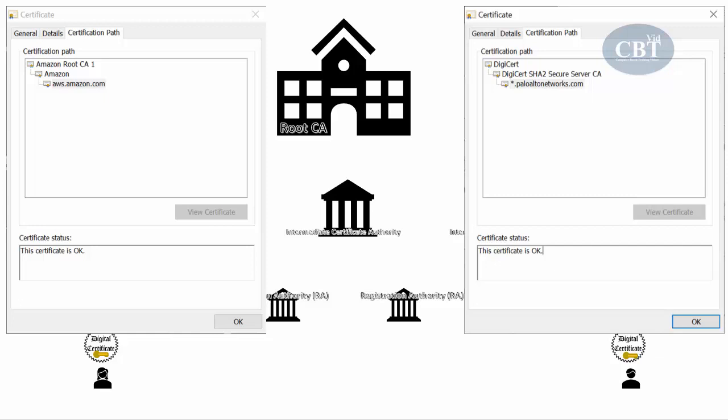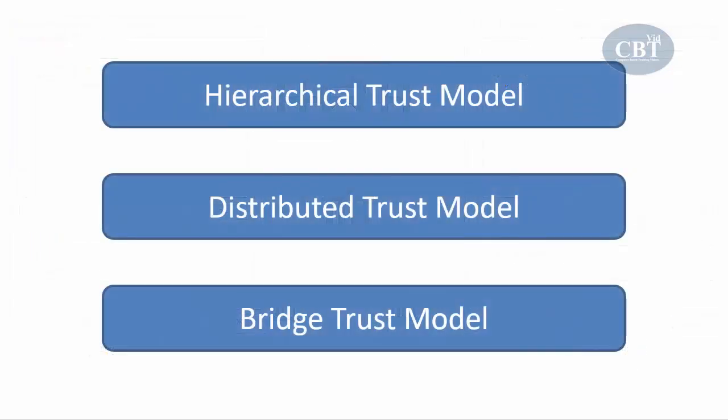How can we have a similar trust model in digital certificates? In public key infrastructure, we have something called a trust model. In this trust model, we have three types: hierarchical trust model, distributed trust model, and bridge trust model. When someone receives a certificate from someone else, even if they don't know them, they can refer to these trust models to find another certification authority who trusts that certificate, and then trust it based on that CA's endorsement.